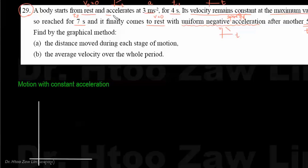Now let's look at the next solution. Using the VT graph approach, we need to identify the changeability of motion. The time intervals are: 0, 1, 2, 3, 4 — totaling 20 seconds across all phases.